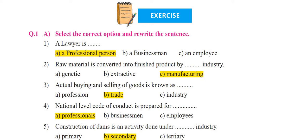Question 1A is 'select the correct option and rewrite the sentence.' Students, whenever you are told to rewrite the sentence, you have to write the full question along with the answer. For example, if the question is 'A lawyer is ___', you must write 'A lawyer is [answer]' completely — only then will you get full marks.